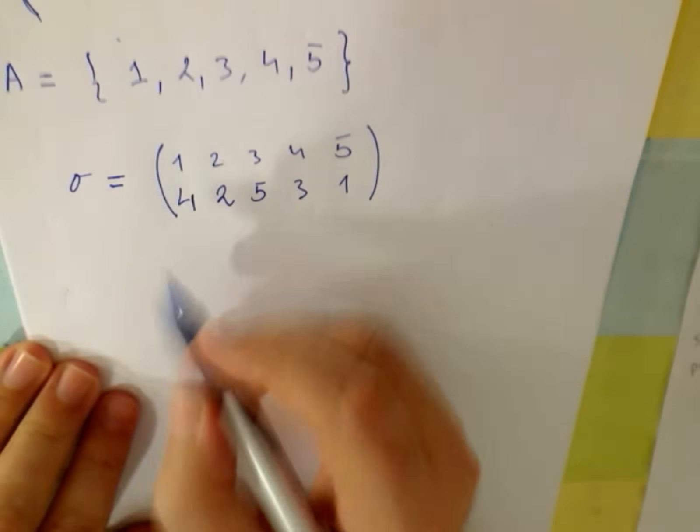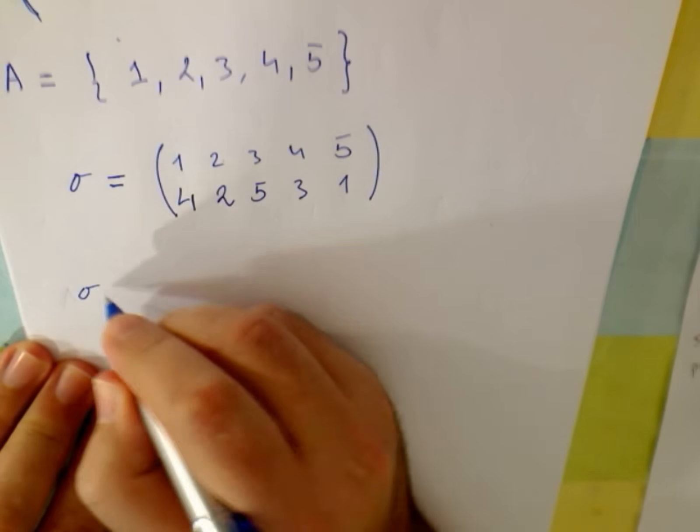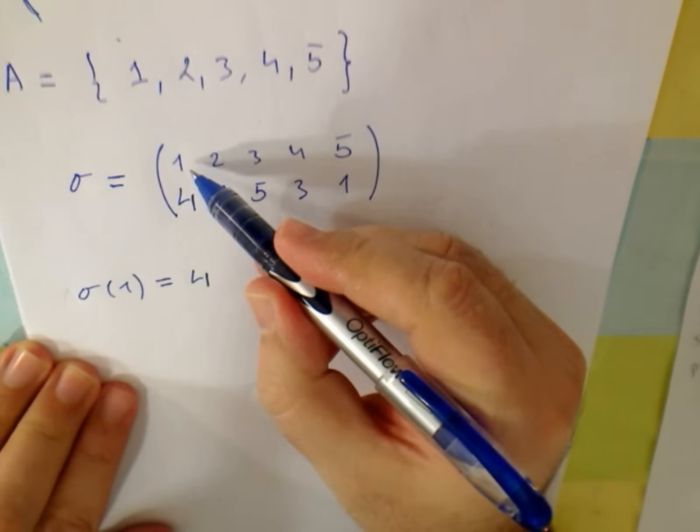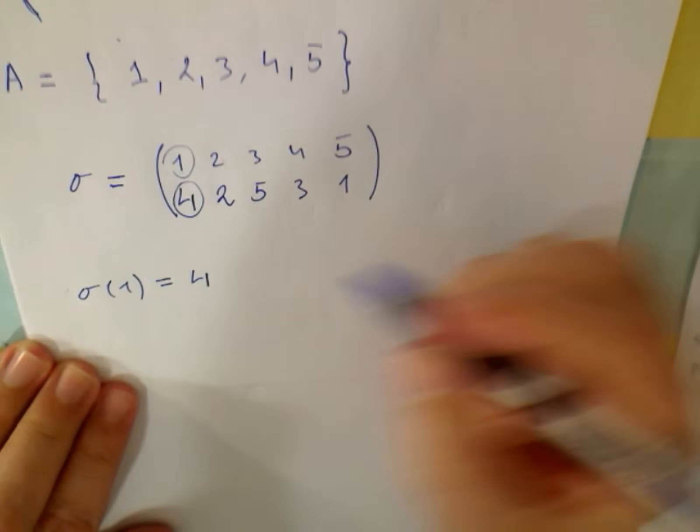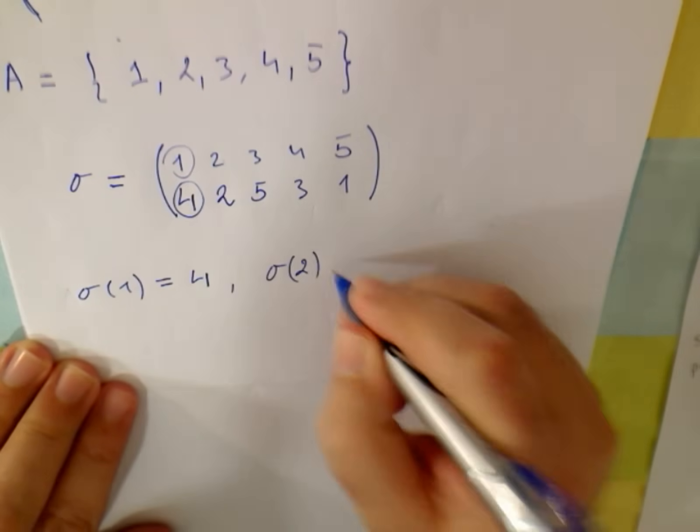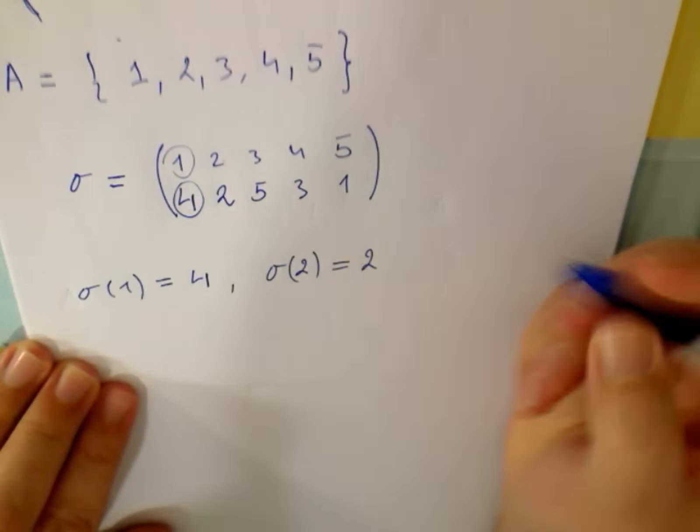Now, since this is a function, we say sigma 1 equals 4. So 1 is the object and 4 will be the image. And sigma 2 equals 2.